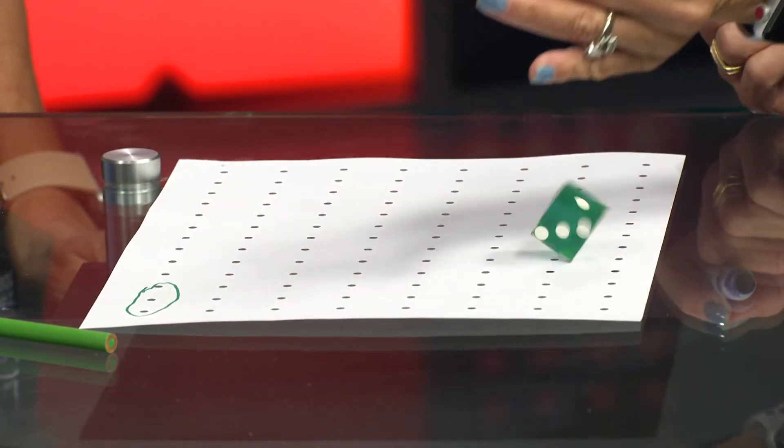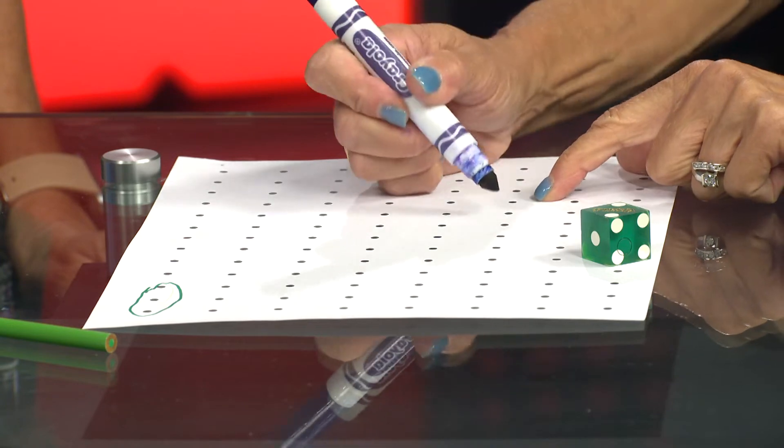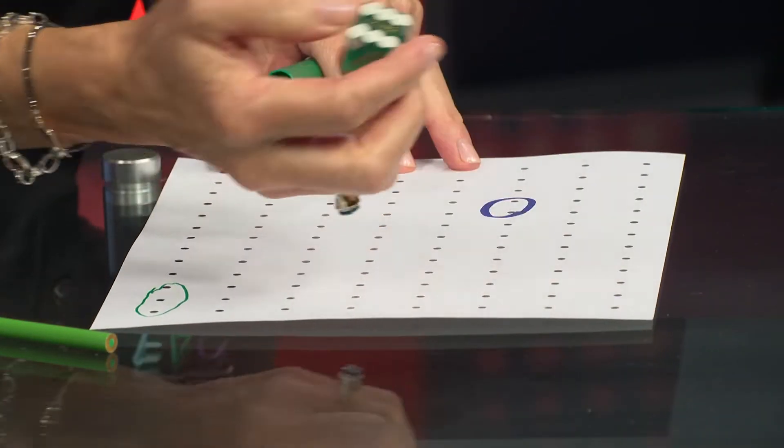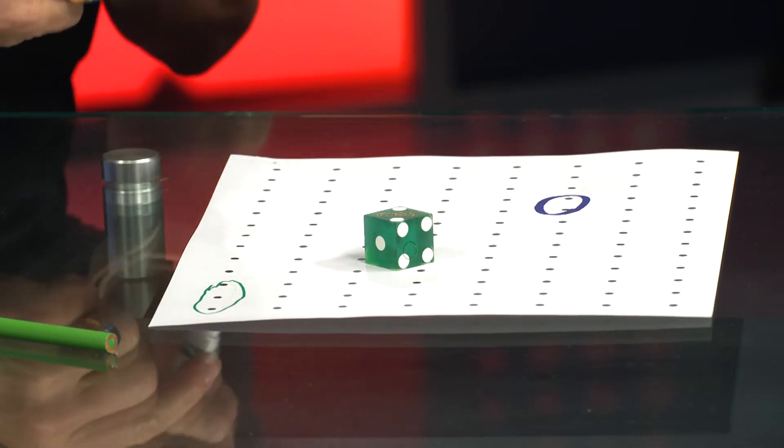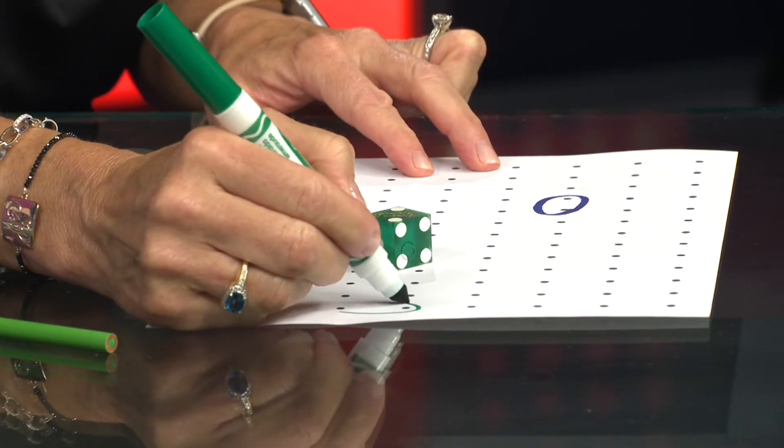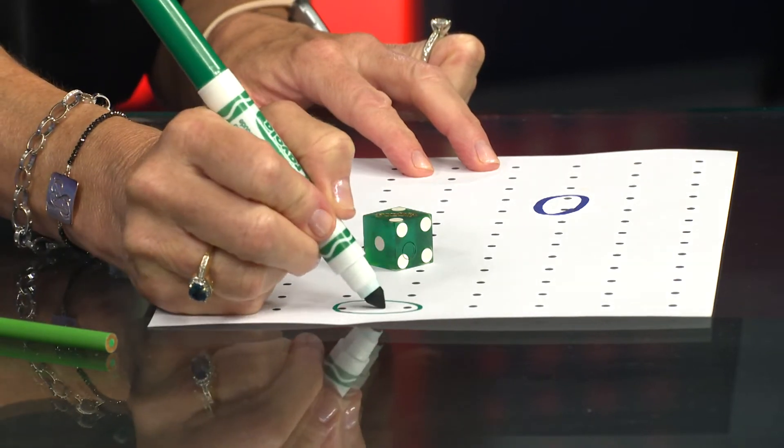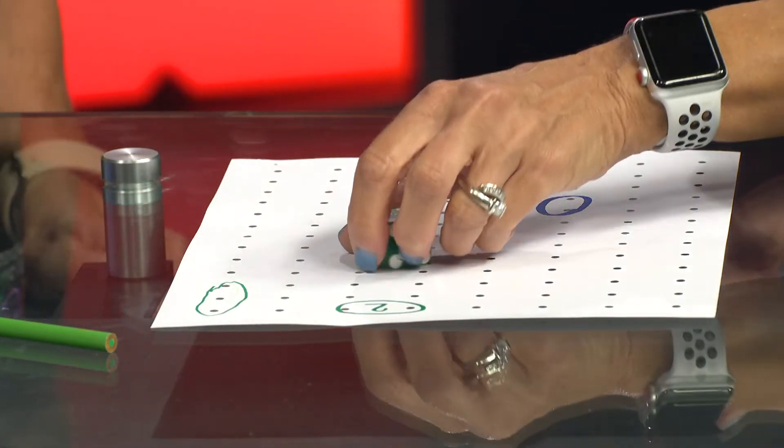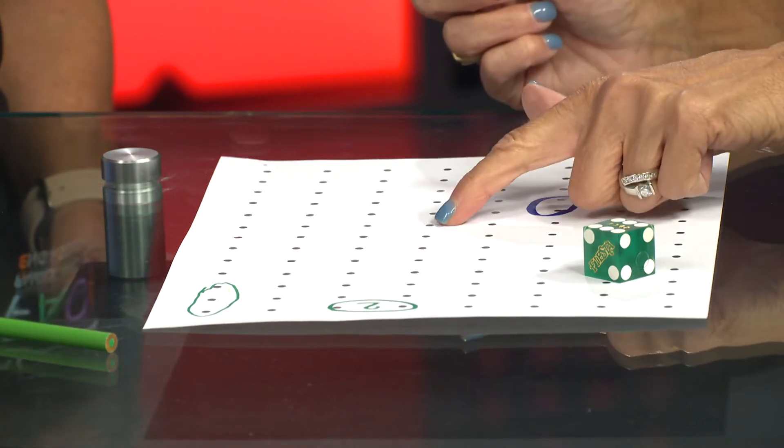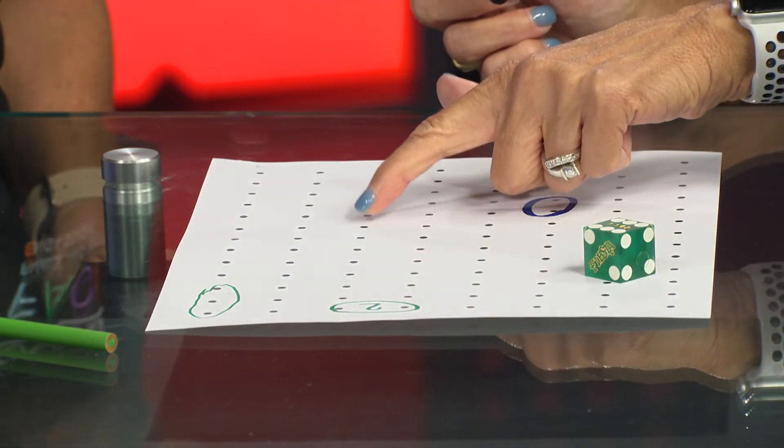Depending on your child's experience level, they may recognize the amount on the die immediately. Some children may need to touch each dot to determine the amount they rolled. That is a natural part of development. If your child is touching the dots on the die to determine the number, that just means they need additional practice with this recognition skill.